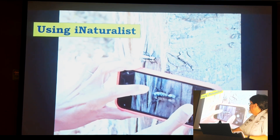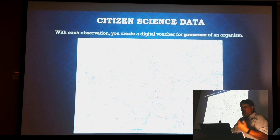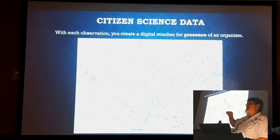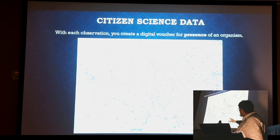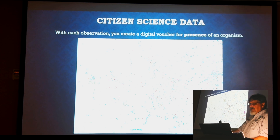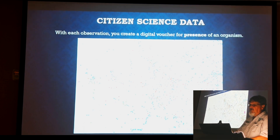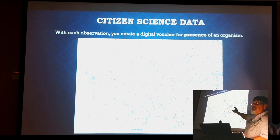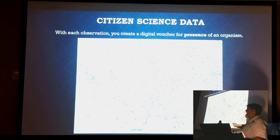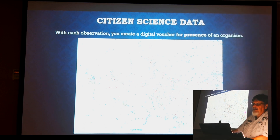When you take a picture with iNaturalist or record a sound, you're creating essentially a digital voucher — saying this species was here at this time, this day, at this location. All those different colors on the map represent different taxa — green for plants, blue or red for birds and others. What's nice about that is over time, if people continue to document, you can go back and say: are these plants still here? Are these animals still here? Or a rare plant botanist can see something in a new place and investigate whether there's a new population.